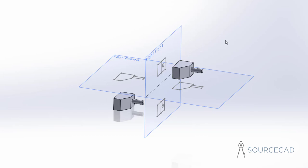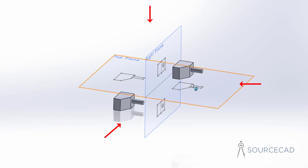Now let's talk about third angle of projection. The viewing direction is exactly the same — we are looking at this drawing from the same directions. In this case, the front view will remain as it is, right here at the front and center in both situations.